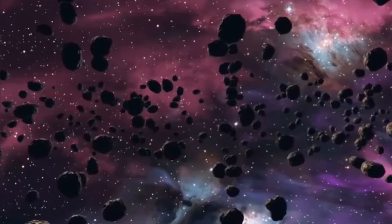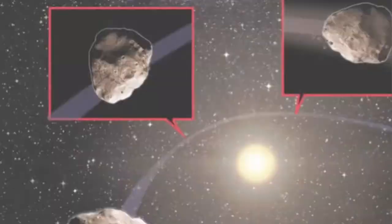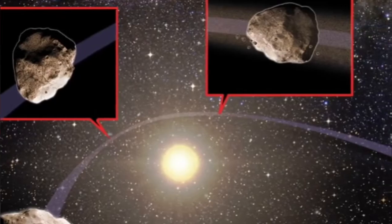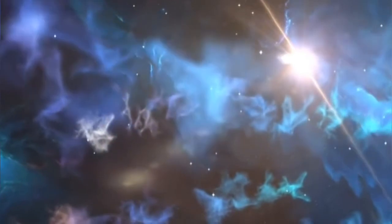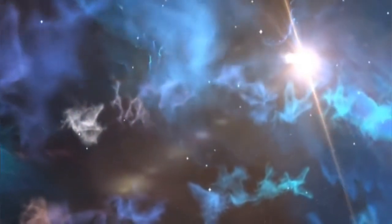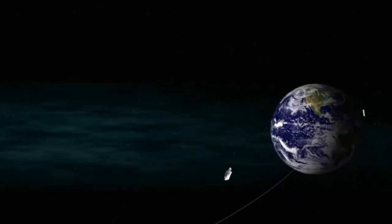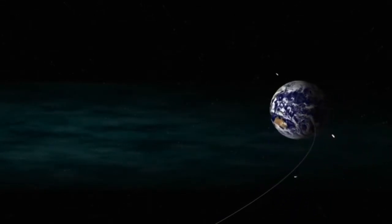There are some asteroids in Jupiter's orbit — they are called Trojan asteroids. Some are near the four inner planets: Mercury, Venus, Earth, and Mars. Some even pass near the Earth very closely.